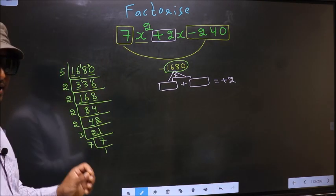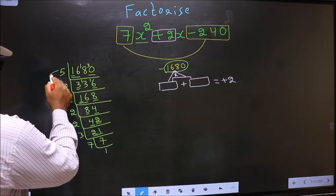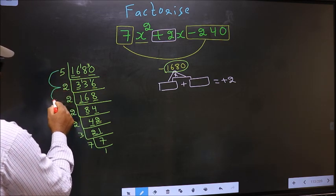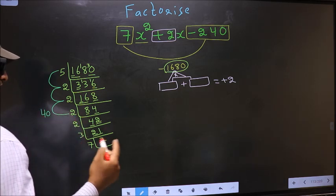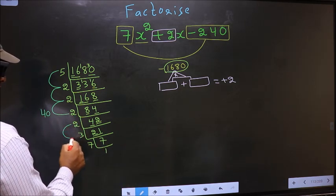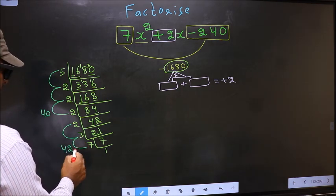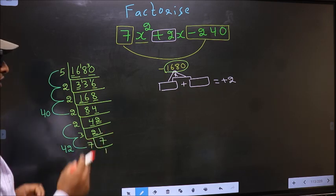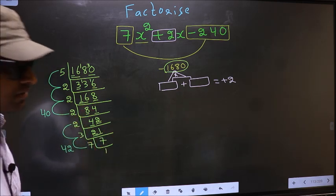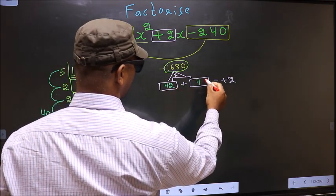Now the 2 numbers should be 5×2 = 10, 10×2 = 20, 20×2 = 40. And the second number is 2×3 = 6, 6×7 = 42. 42×40 is 1680. So here you write 42 and here 40.